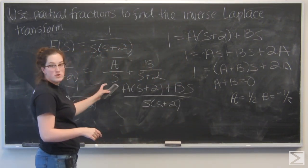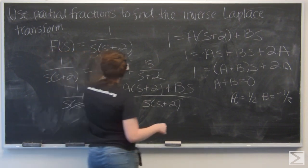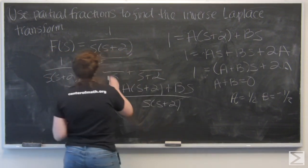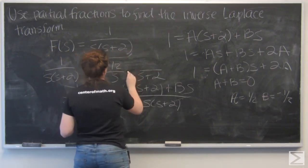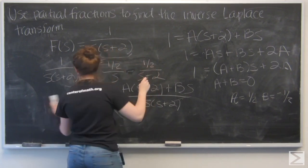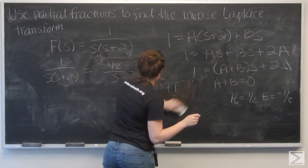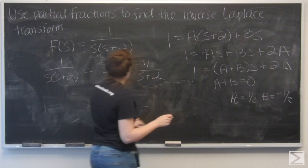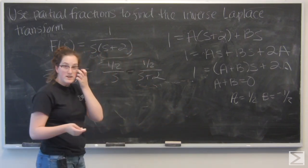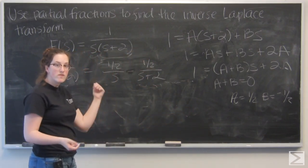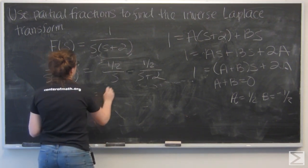So I can go ahead and plug that in over here and I have 1 half over s minus 1 half over s plus 2. I'm going to pull out that 1 half just so this is a little easier to work with.